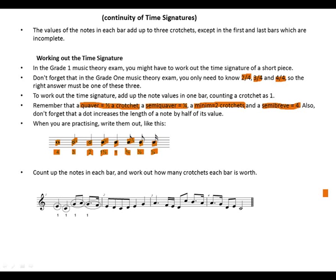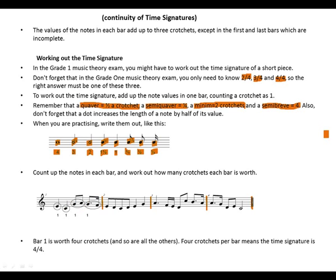Count up the notes in each bar and work out how many crotchets each bar is worth. Here is our first bar, second, third, and fourth. Each bar is worth 4 crotchet beats, so the time signature is 4/4.